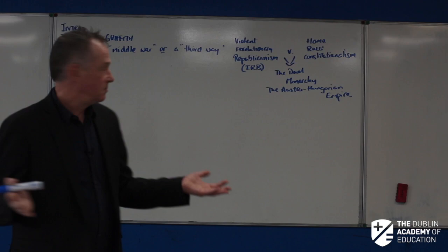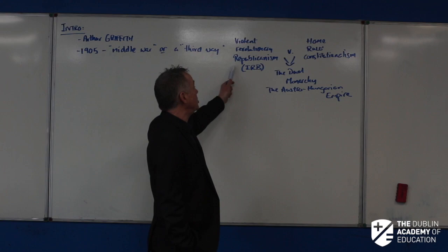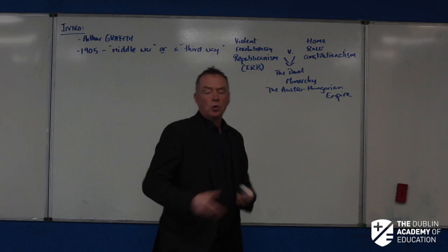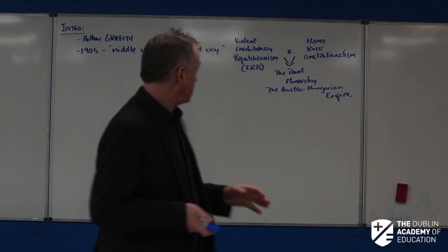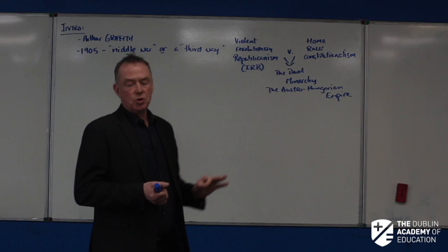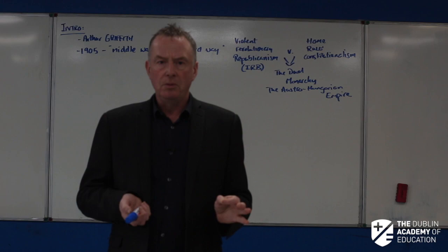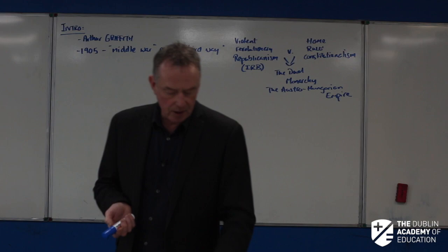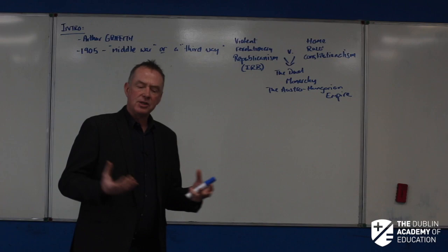But it wasn't a seller. Republicanism is easier to understand, and home rule is easier to understand. The point being that Griffith was not a Republican — and we're going to see a contrast with that later, as the drive toward Republicanism takes over everything in 1916.